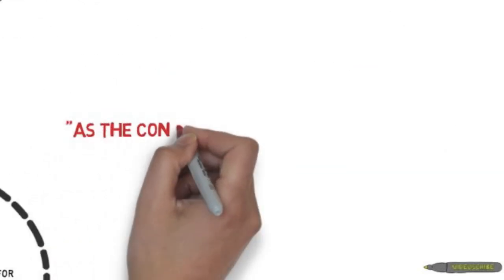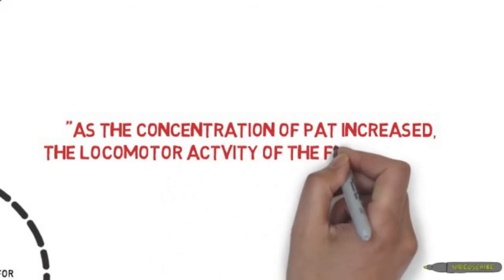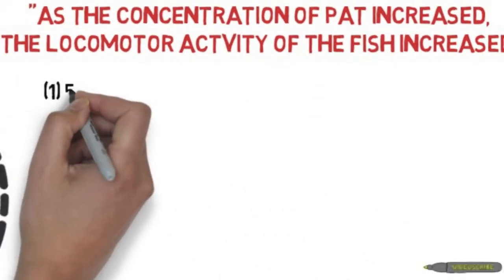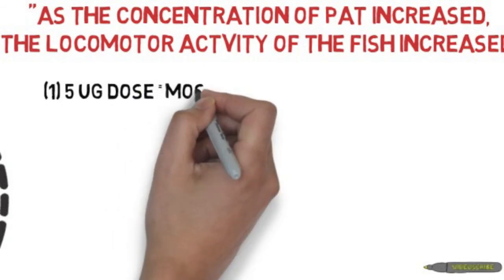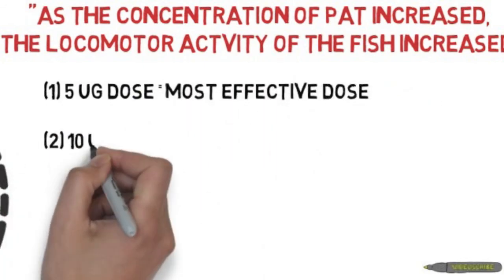Let's look at the results. As the concentration of patulin increased, the locomotor activity of the fish also increased. Moreover, we also showed that first, the 5 microgram dose seems to be the most effective dose of patulin.